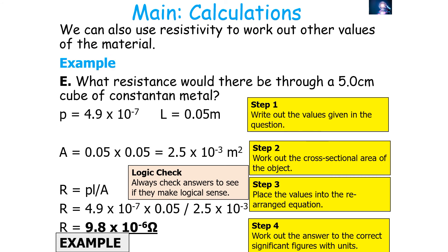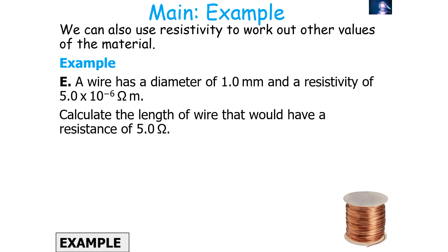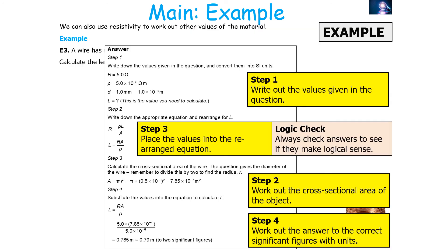For the second example, work out the resistance in a cube of 5 centimetres length with a known metal. Write out the values, calculate the cross-sectional area, then place into the equation R = ρL/A and check whether the answer looks suitable. For the third example: a wire has a diameter of 1.00 millimetres and a resistivity of 5.0 × 10⁻⁶ ohm metres — calculate the length of wire that will give a resistance of 5.0 ohms. Write out the values, work out the cross-sectional area using πd²/4, place into the rearranged equation, and work out the answer to the correct number of significant figures with units.